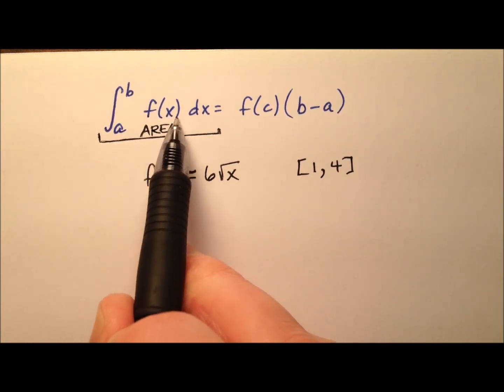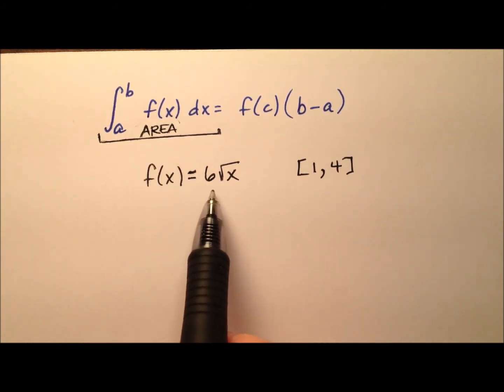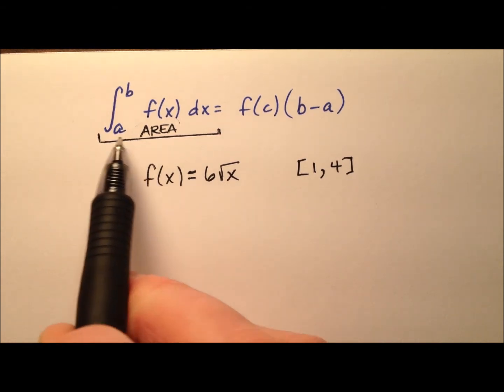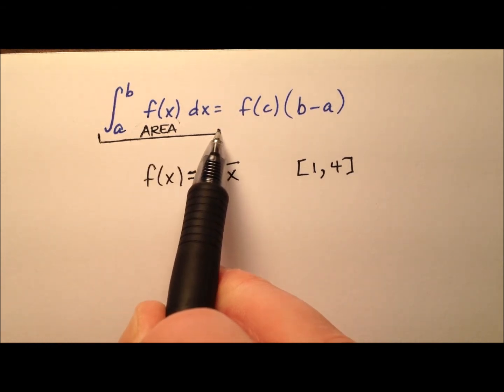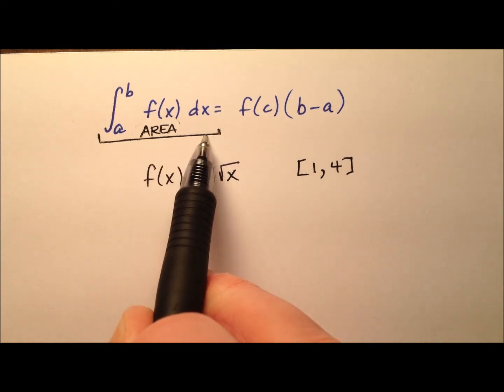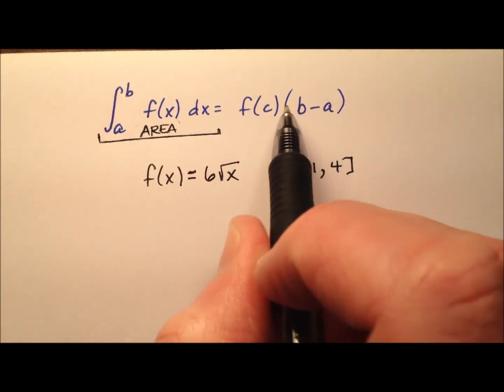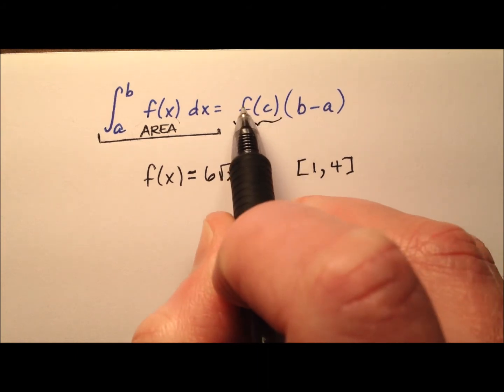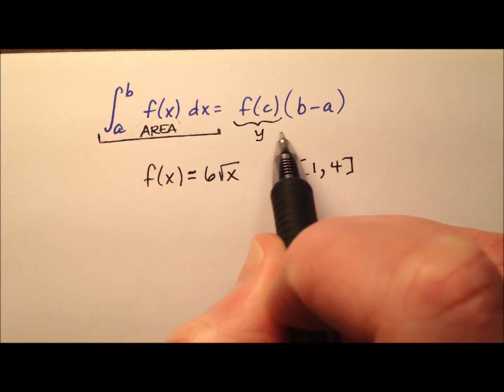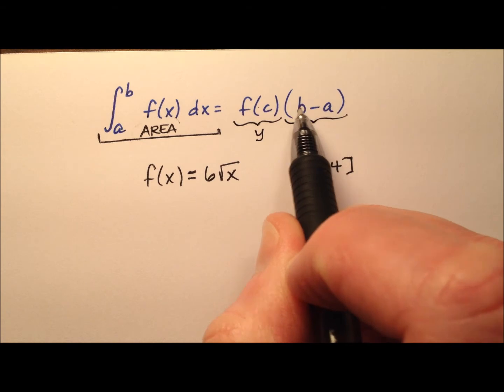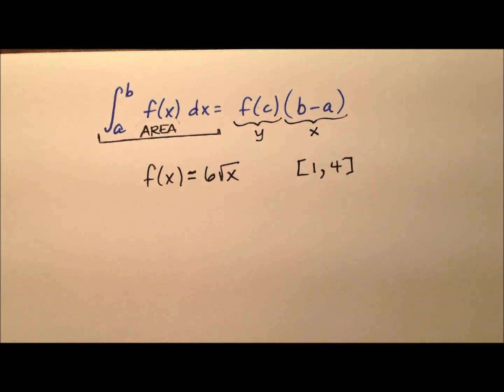This region is bound above by the graph of the function, 6 times the square root of x, and it's bound below by the x-axis, and it has that curvature on the top. And so what we're saying that is equivalent to is some f of c, which actually is a y value, multiplied by b minus a, which is an x value.